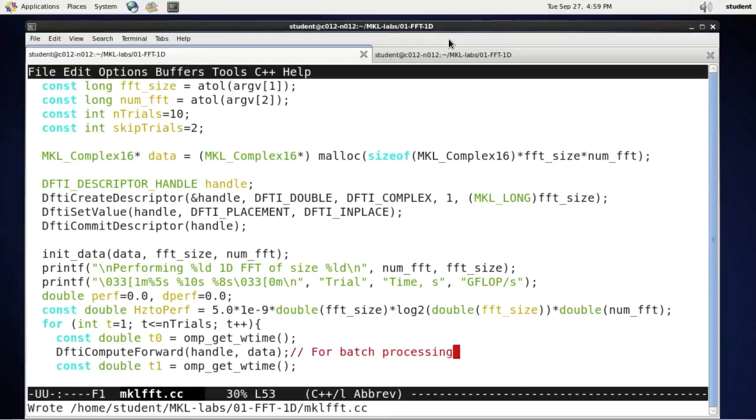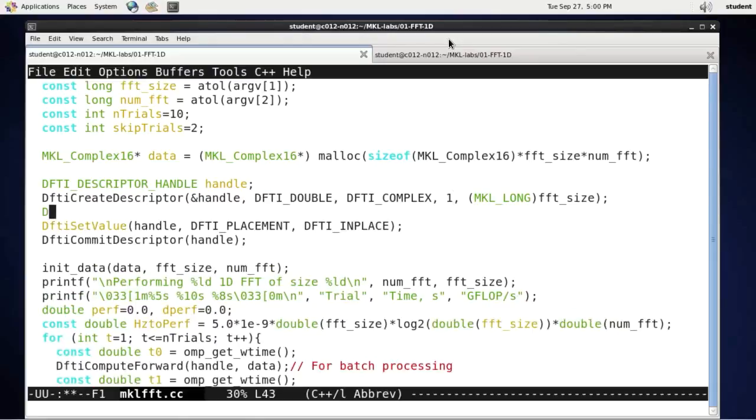But before I can do that, I need to modify my descriptor. Specifically, I need to indicate that I'm going to run several transforms at a time. And this is how I'm going to do this. dfti_setValue sets the value of one of the arguments of the descriptor.